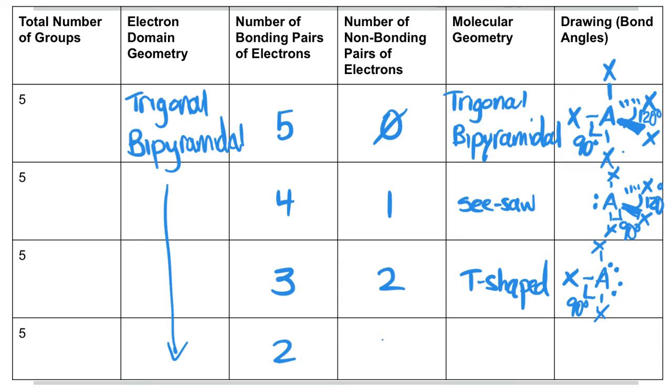The last one has two bonding pairs, three non-bonding pairs. This one's called linear, and it looks a lot like our linear shape that's based off of a two-electron domain geometry, except now we've got one going up, one going down, but we have three lone pairs of electrons around that central atom. And we do draw them at angles. Bond angles here, 180 degrees because it's linear. So those are all of our shapes based on a trigonal bipyramidal electron domain geometry.